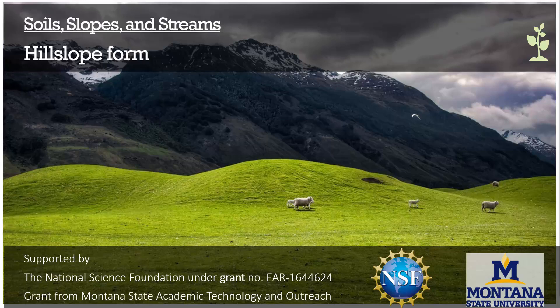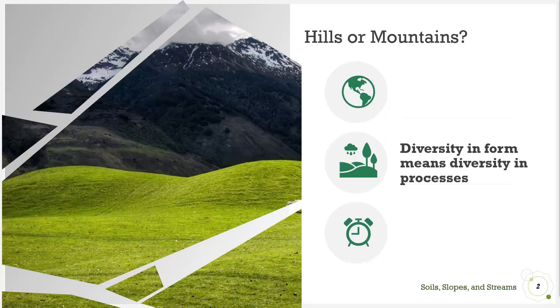In this lecture of the series Soil, Slopes, and Streams, we'll talk about hill slope form. We'll focus on terms we use to describe hill slopes. Being able to describe their form is really important for understanding why they look the way they do, and what kind of processes are active in shaping and sculpting them. On landscapes such as the ones we see here, form and process are closely related.